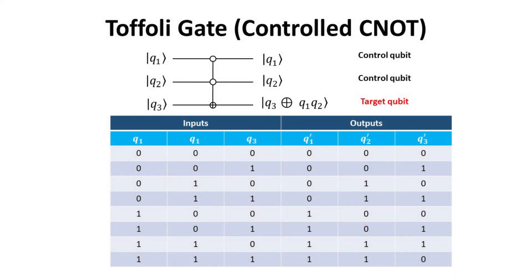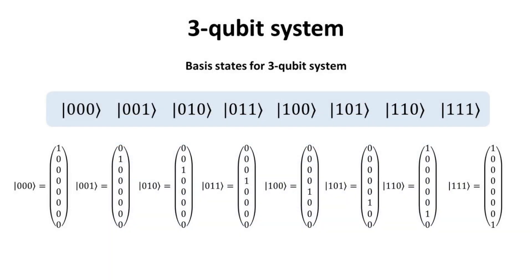The truth table of the Toffoli gate is presented as follows. Note that the first two, the control qubits, never change their states. The target qubit flips its state if the first two qubits are 1. This is exactly the boolean operation, XOR of Q3 with the product of Q1 and Q2. In what follows, we seek the matrix representation of the Toffoli gate. These are the basis states for a 3 qubit system. Notice that now we have 8 basis states, which is equal to 2 to the power of 3. A system of N qubits will be spanned by 2 to the power of N basis states.